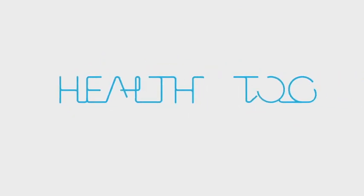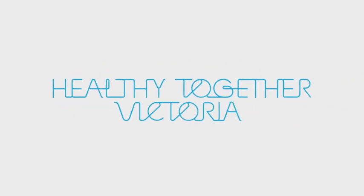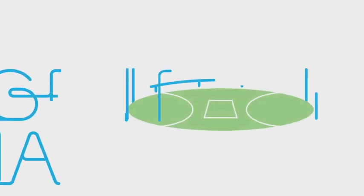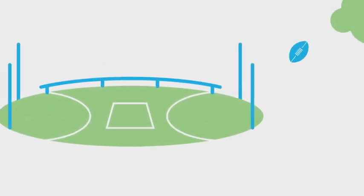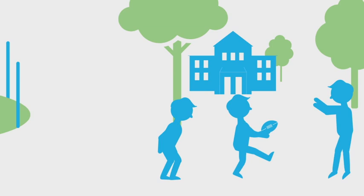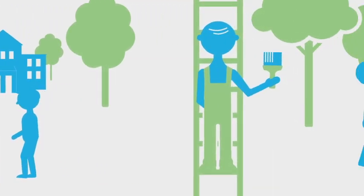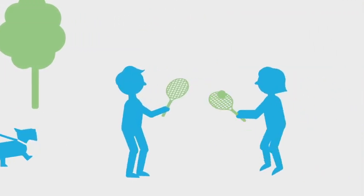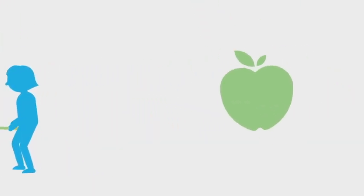We've named this approach Healthy Together Victoria. The focus of Healthy Together Victoria is to help people to stay healthy and well as long as possible, via children's settings, workplaces and community locations, in places like sporting clubs and food outlets.